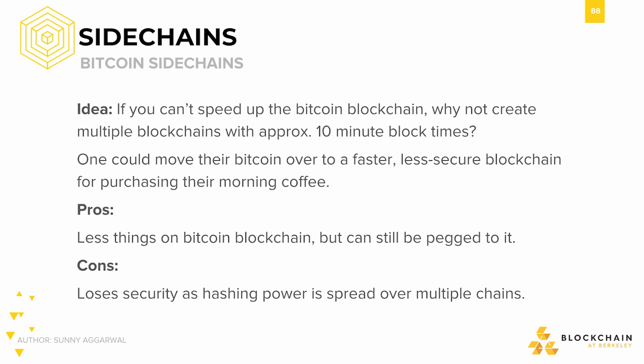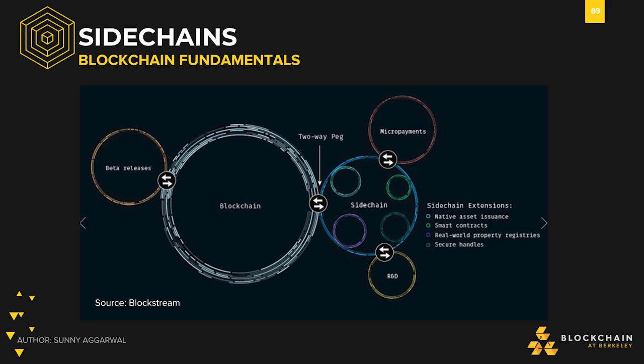However, a downside might be that we would suffer a bit on the security side since hashing power would be spread over multiple chains, and if every individual owns a larger proportion of a chain's hash power, that's a prime target for large mining pools. And if this is the case, there also needs to be countermeasures against a compromised chain. Here's an idea of how sidechain networks would look. Each one of these circles is a sidechain with a unique purpose. This specific image is from Blockstream. The proposal here shows the main blockchain in the biggest circle in the middle. On the left, there's a sidechain for beta and other pre-production releases. On the right, we could have sidechains that enable features such as smart contracts, micropayments, real-world property registries, and others.